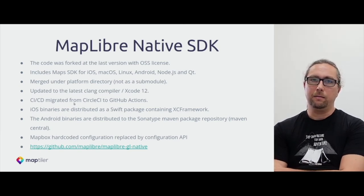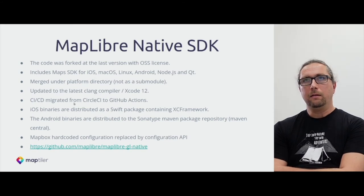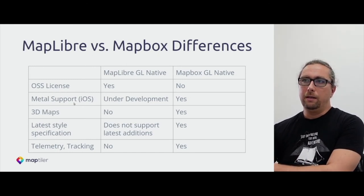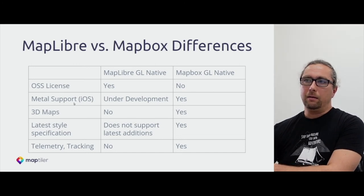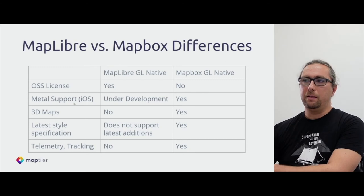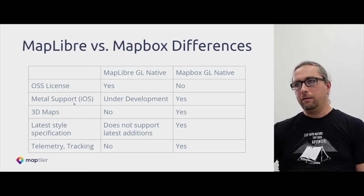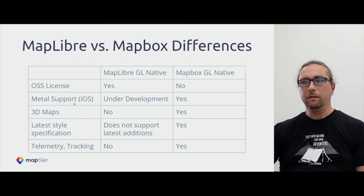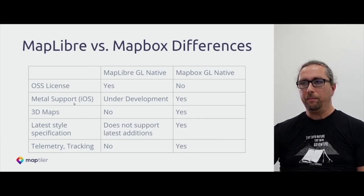One thing still underway is implementing Metal support for iOS devices. To summarize the differences between MapLibre and Mapbox: MapLibre has an open source license, Metal support for iOS is underway, MapLibre doesn't have all the latest 3D maps — although it can render RGB terrain, hillshade, and similar features. It doesn't support all the latest additions to the style specification, and there is no tracking telemetry.